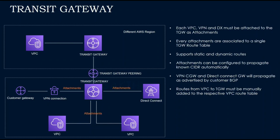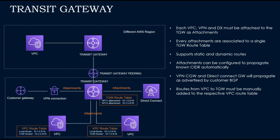To set up Transit Gateway, each VPC, VPN, or Direct Connect must be attached to your Transit Gateway as an attachment. Every attachment must be associated to a single Transit Gateway route table, which supports static and dynamic routes. Attachments can be configured to propagate the known VPC CIDR ranges automatically. VPN Customer Gateway and Direct Connect Gateway will be advertised by the Customer BGP. The routes from the VPC to the Transit Gateway must be manually added to the respective VPC route table.